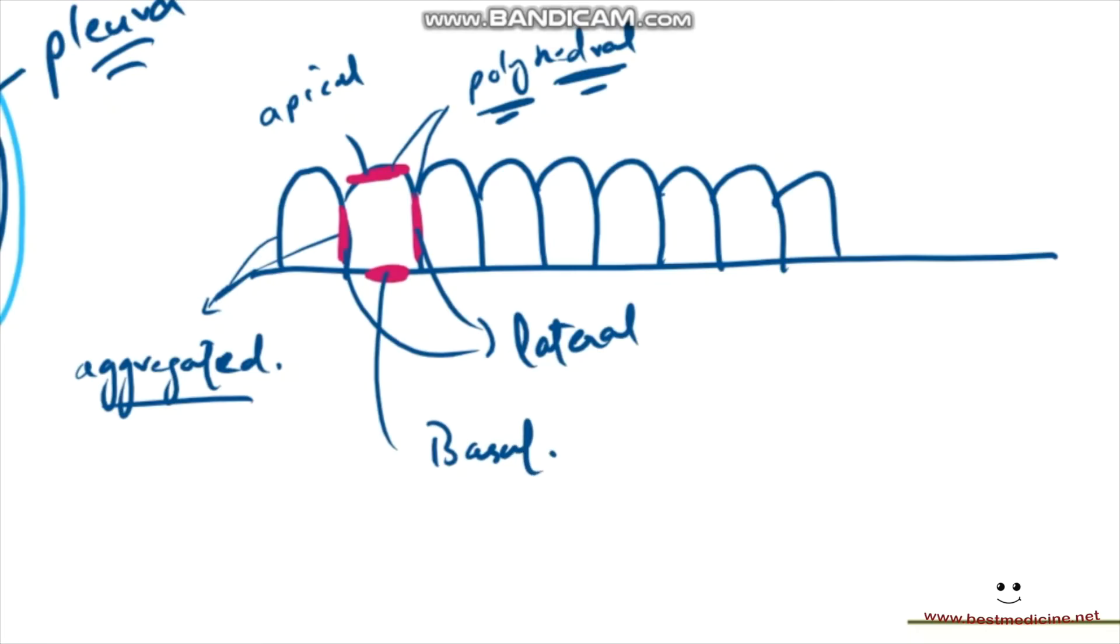And so because of all of these faces, the cells are said to have cell polarity. So number one, aggregated. Number two, polyhedral. Number three, you'd say cell polarity.